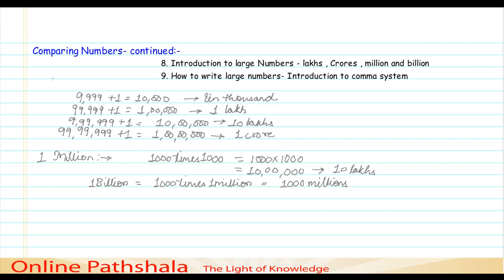In the international system of numbers, 1 million is denoted as 1000 times 1000. That is, it is more of an Indian system representation of 10 lakhs. And 1 billion is 1000 times 1 million, or you can say 1000 millions.